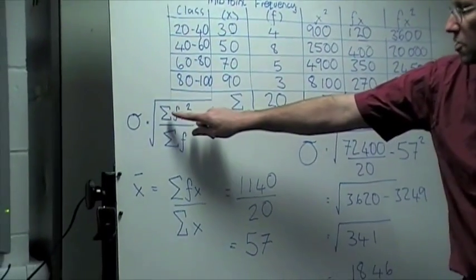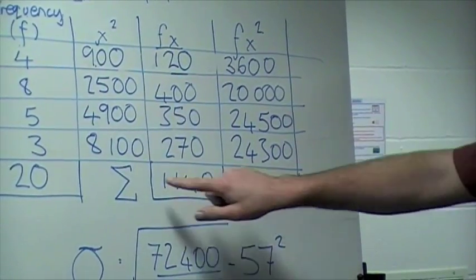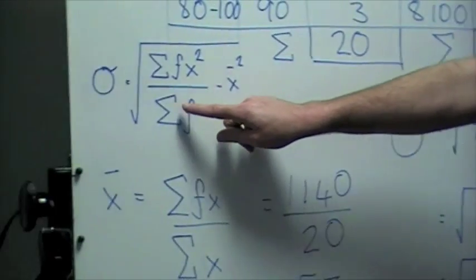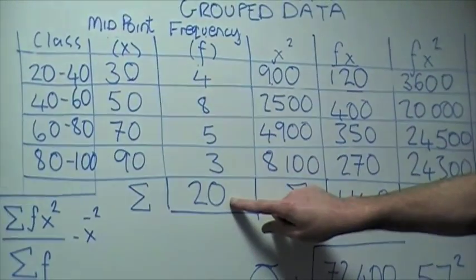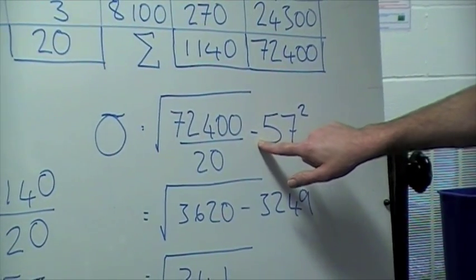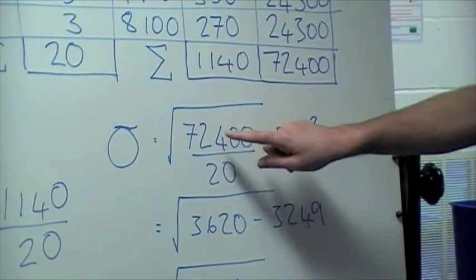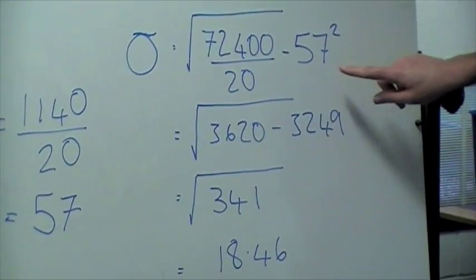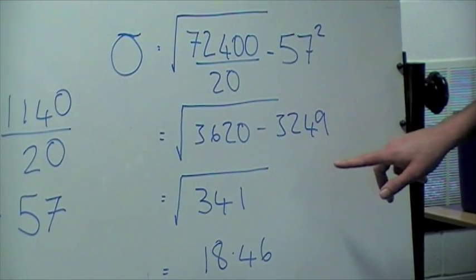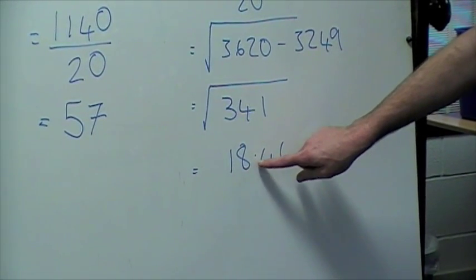The first part is asking us for the sum of the frequency times the midpoint squared, which is this figure here. This is the sum. So we've got 72,400. The sum of the frequency is here, which is 20. And we have to subtract the mean, which we've already calculated, squared. This gives us the next stage of the square root of 3620 minus 3,249, which ends up as a standard deviation of 18.46.